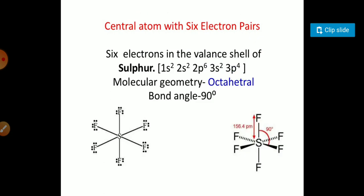The central atom with six electron pairs, like SF6, in SF6 the sulfur has an octahedral structure with 90 degree bond angles.